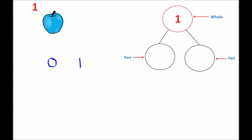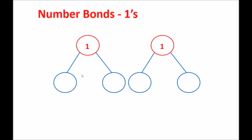Is there another number bond we can create? Because we created a 0 and a 1, we can now create a 1 and a 0. This time the 1 is the left part and the 0 is the right part — two different number bonds. The whole is still 1, but this time we have a 1 on the left side and a 0 on the right side. So for the number 1, there are two number bonds: a 0 and a 1 with the 0 on the left, and a 1 and a 0 with the 1 on the left.